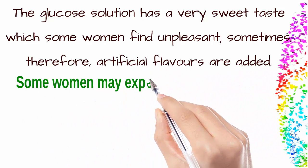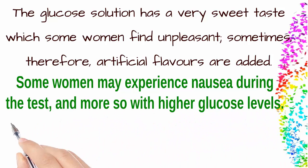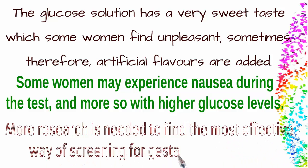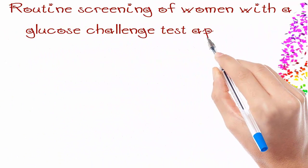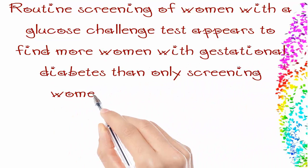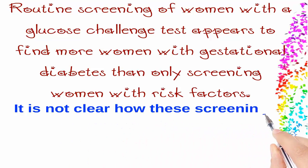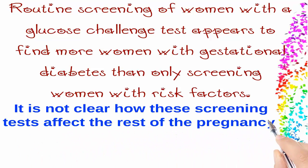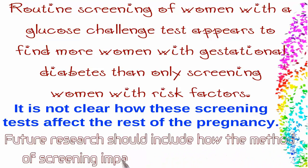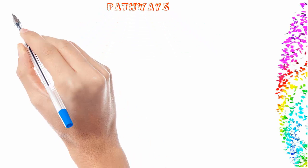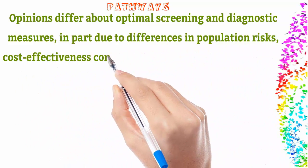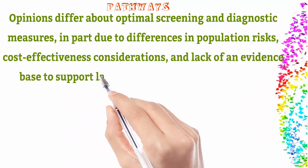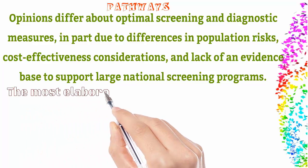Some women may experience nausea during the test, more so with higher glucose levels. More research is needed to find the most effective way of screening for gestational diabetes. Routine screening with a glucose challenge test appears to find more women with gestational diabetes than only screening women with risk factors. It is not clear how these screening tests affect the rest of the pregnancy. Future research should include how the method of screening impacts the mother and baby. Opinions differ about optimal screening and diagnostic measures, in part due to differences in population risks, cost-effectiveness considerations, and lack of an evidence base to support large national screening programs.